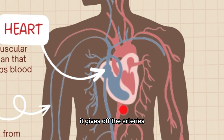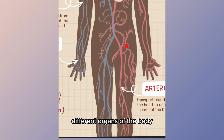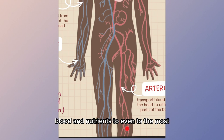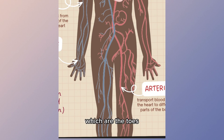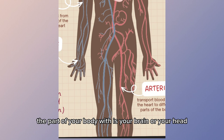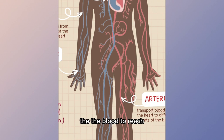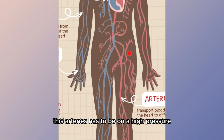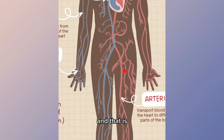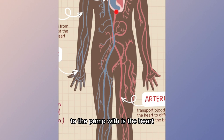The heart gives off arteries that bring blood, oxygen, and nutrients to the different organs of the body, distributing them to even the most distal parts — the toes of the lower extremities, the fingers of the upper extremities, and the brain. In order for blood to reach the farthest parts of the body, these arteries have to be under high pressure at all times, which is made possible by their proximity to the heart.